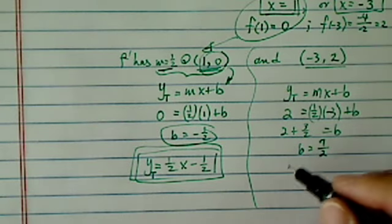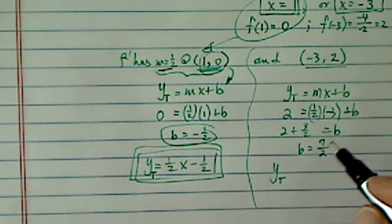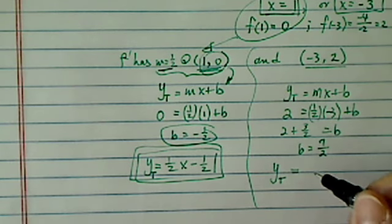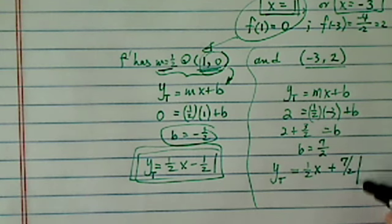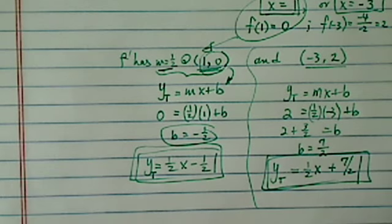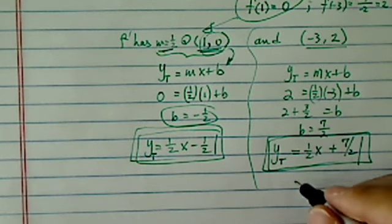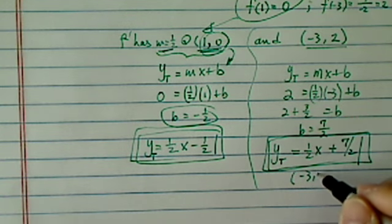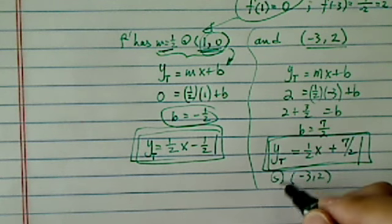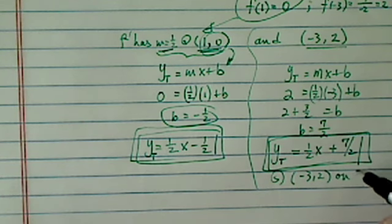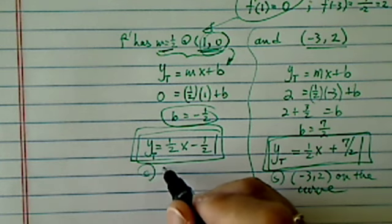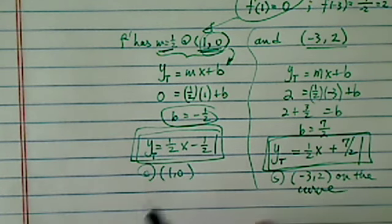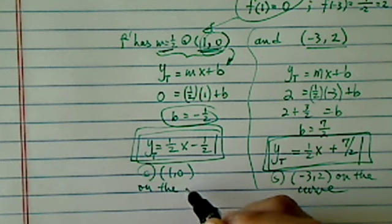So I just simplified over there. So for this point, y tangent is equal to a half of x plus 7 over 2. This tangent line is for the curve at point minus 3 and 2 at this point on the curve, and this one is at point 1 and 0 on the curve.